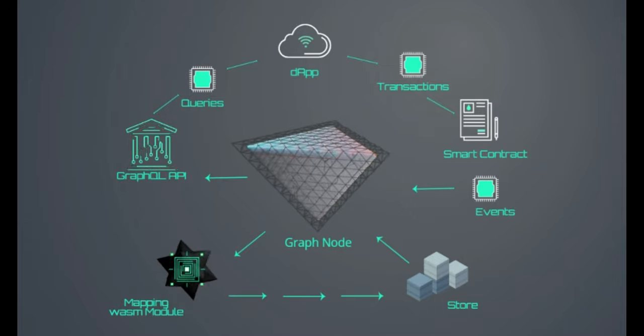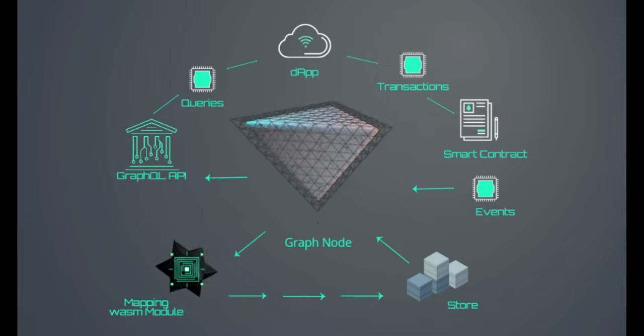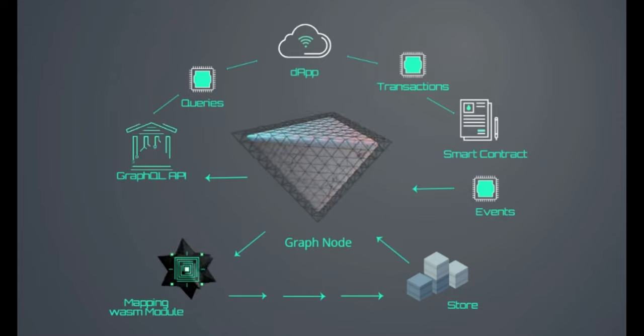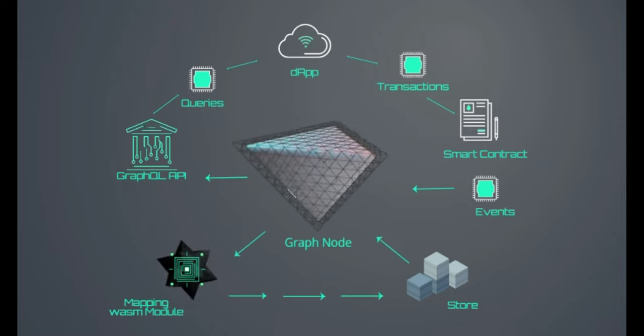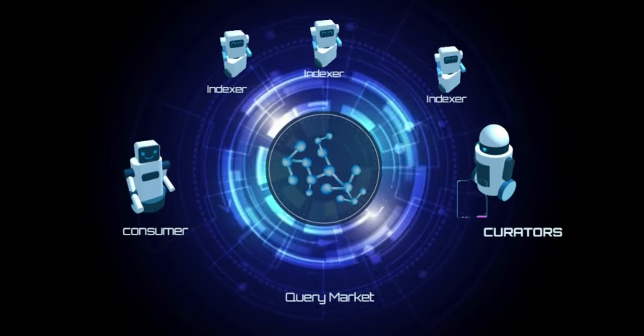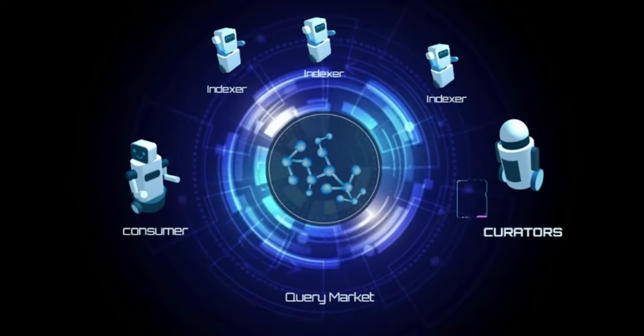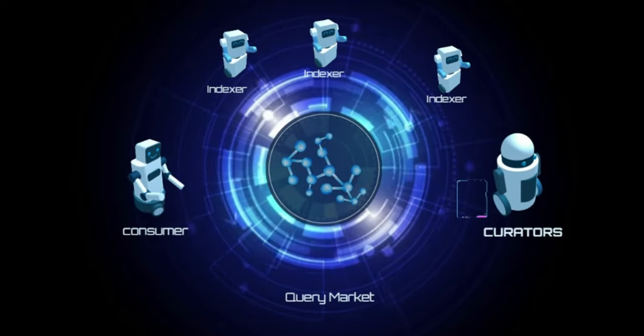Once the Graph node processes data, there are three types of users who contribute to organizing data in its protocol. These include: Curators. Curators analyze subgraphs APIs to identify subgraphs of high quality.